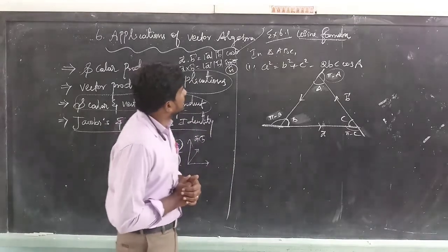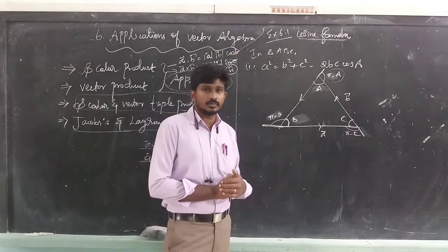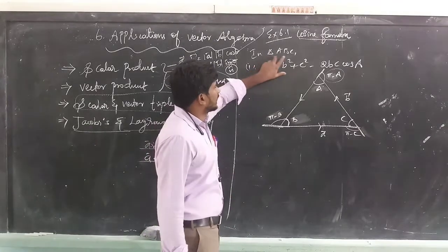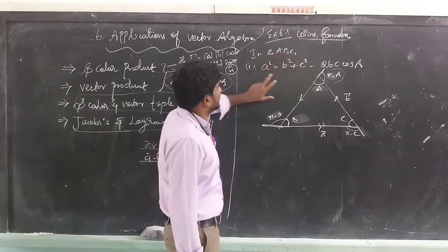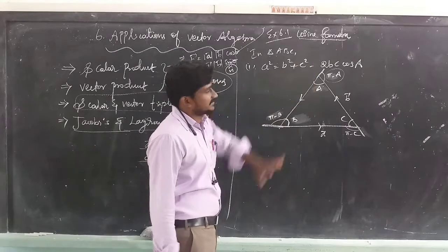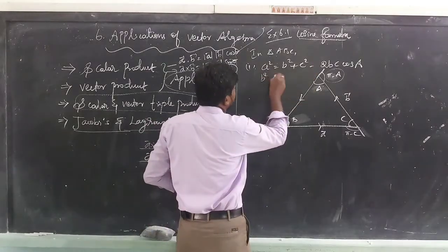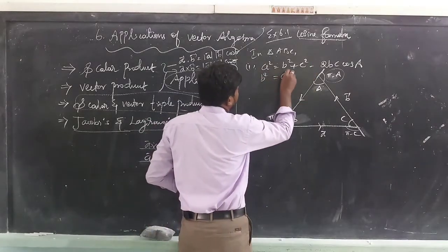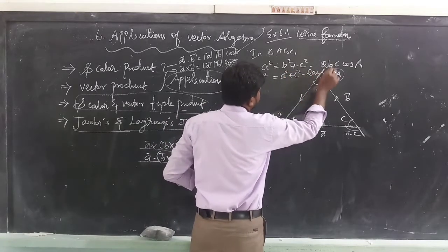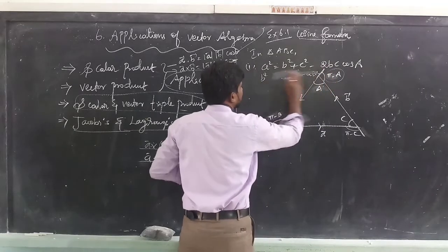The first proof is Example 6.1, which is already a trigonometric cosine formula. If you write a triangle A, B, C: a² = b² + c² − 2bc·cosA. This is a little bit altered. If you write b²: b² = a² + c² − 2ac·cosB.